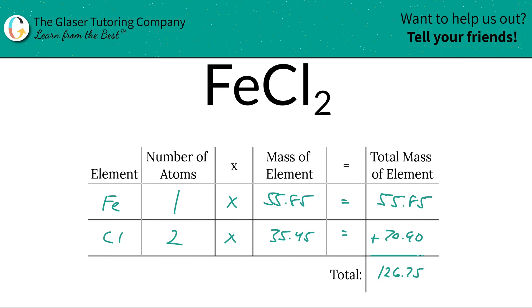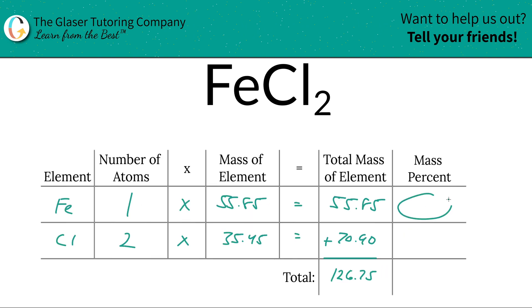Now I'm going to add a column to this table. The rest is going to be easy peasy. So to find the mass percent of iron, all we're simply going to do is take the total mass of that iron, divide it by the total mass of the compound, and that's why we had to find the total mass first.